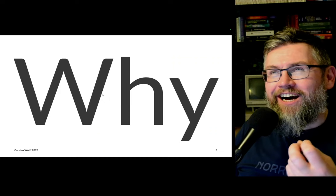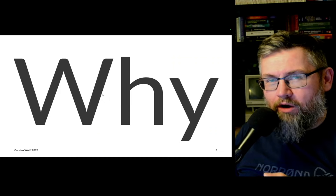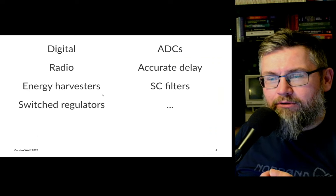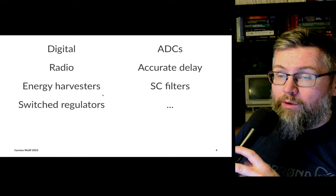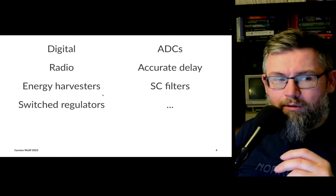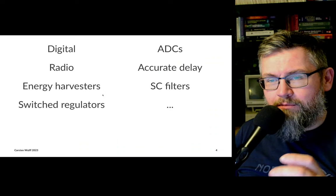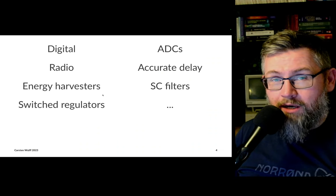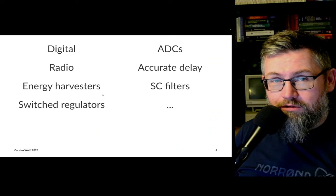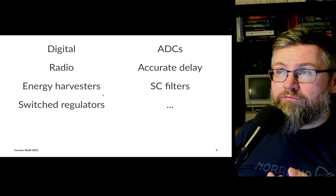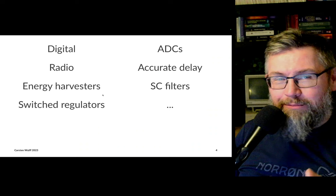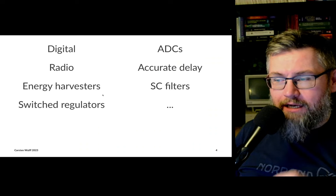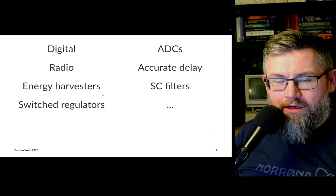But first, why? I really think it is important to understand the why, because then it becomes easier to understand which key parameters matter on an analog circuit. When it comes to clocks, they are used in a multitude of applications: in digital, in radios, in energy harvesters, in switch mode converters where we need a clock to switch between different switches, in ADCs for accurate timing, for making accurate delays, and in switched-cap filters.